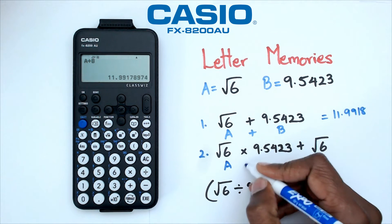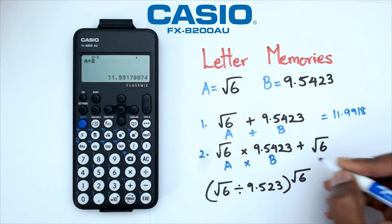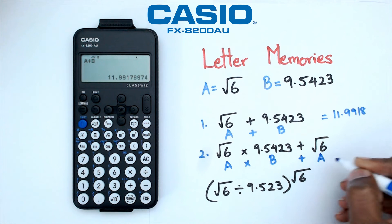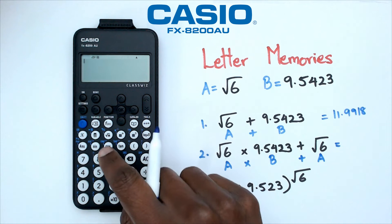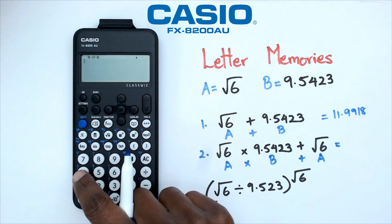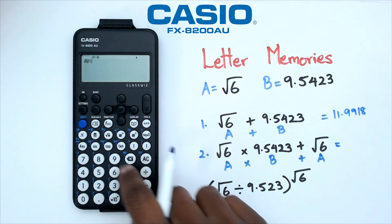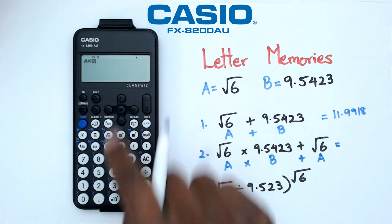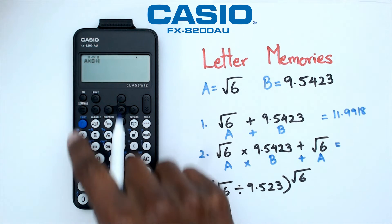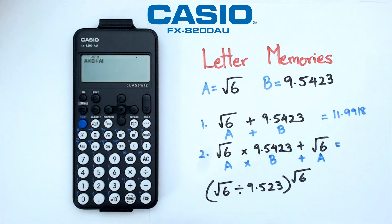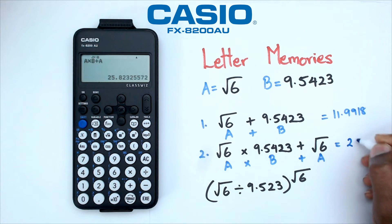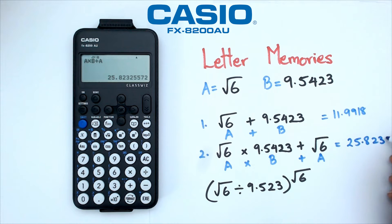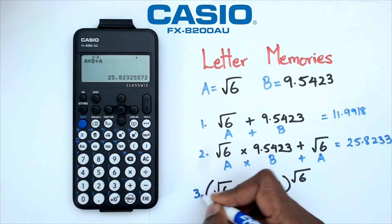For question number two I've got A times B plus A. I go Shift four — which is A — multiplied by Shift five — which is B — plus Shift four — which is A — and when I press equals I get twenty-five point eight two three three.